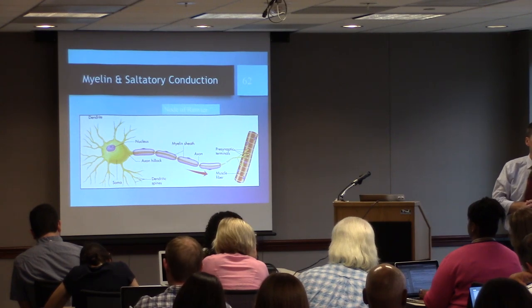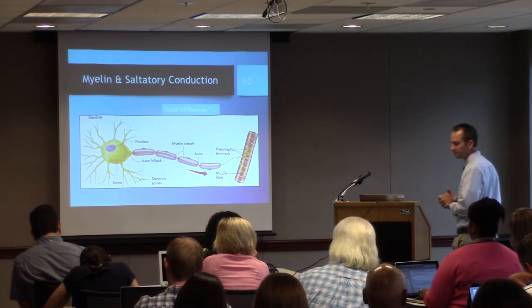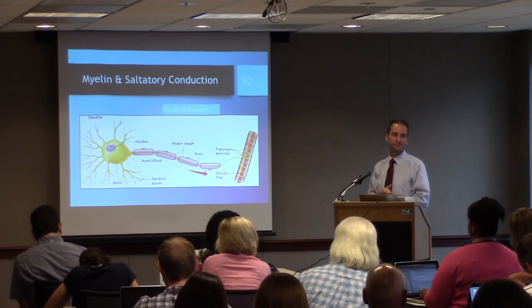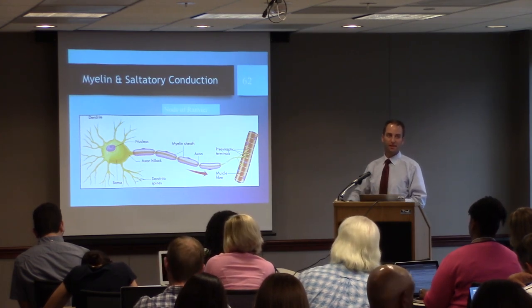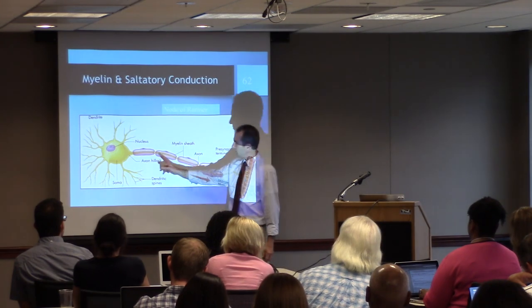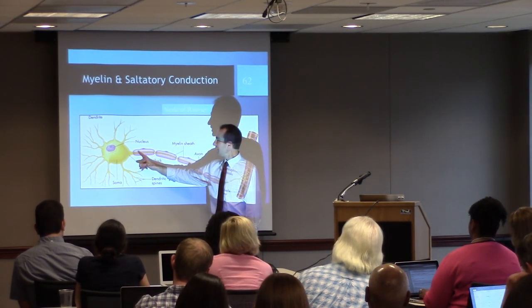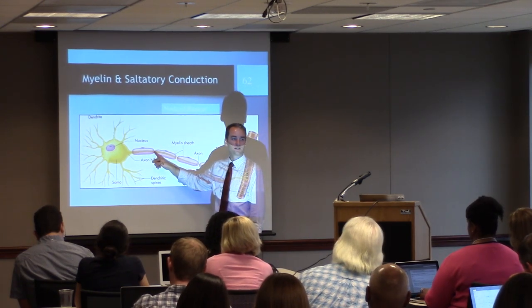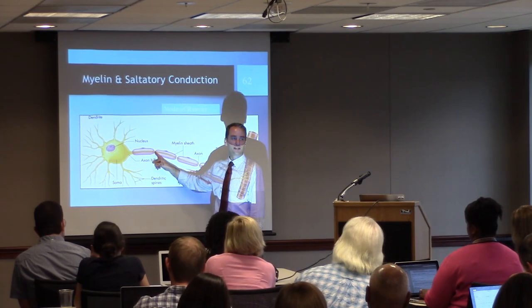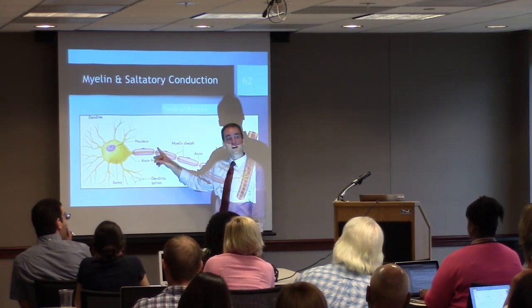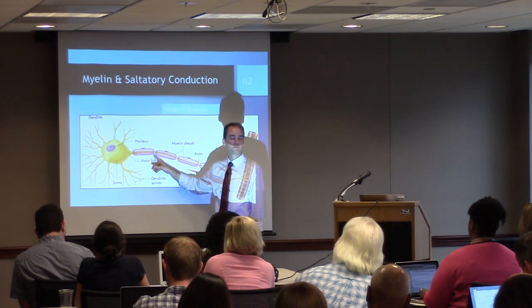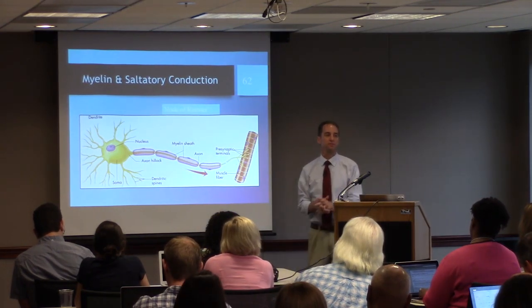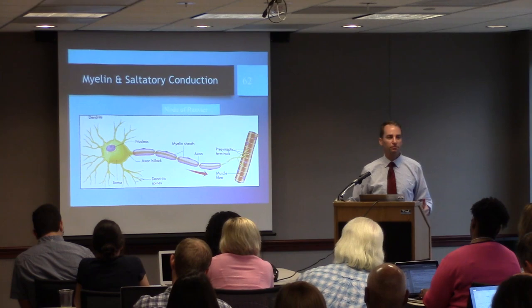With MS, the myelin breaks apart. The deficit is that they're losing signal — without the insulation, the electrical change spreads too much and can't get to the next node to regenerate. This can affect myelinated neurons supplying muscles or sensory neurons, so it's unpredictable where you'll see the deficit — could be vision, could be movement. MS destroys the myelin, which is bad.